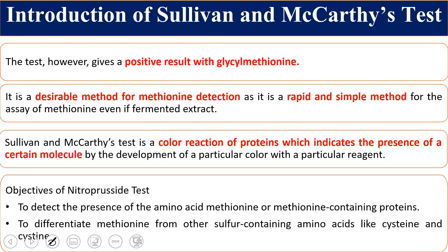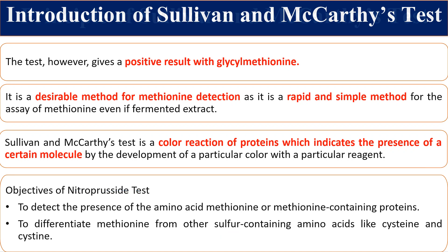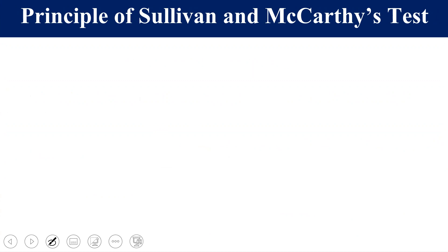This Sullivan-McCarty test is sometimes called a chromophoric or color-production test. The objective of this test is to detect the presence of amino acid methionine or methionine-containing proteins, and to differentiate methionine from other sulfur-containing amino acids like cysteine.